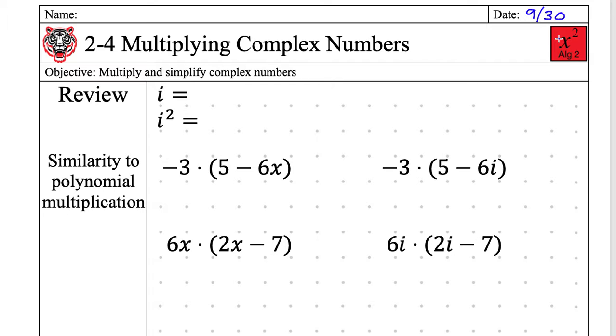Yeah so this should be a review from 2-1. What is the definition of i? It's equal to some square root Caroline. It is indeed square root of negative one. Thank you Jayden for getting the 50 XP there. And you get this Caroline.